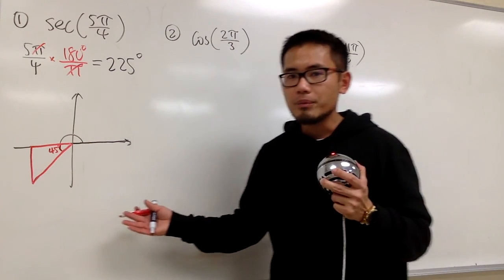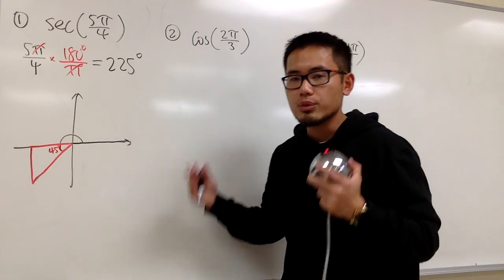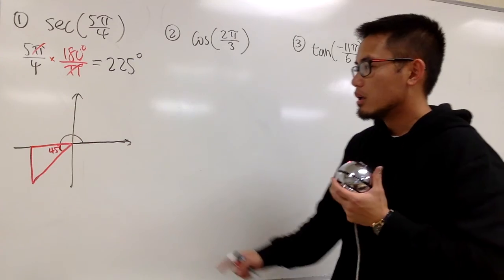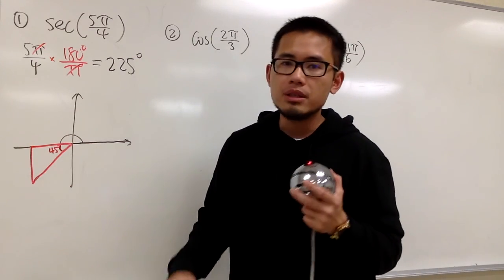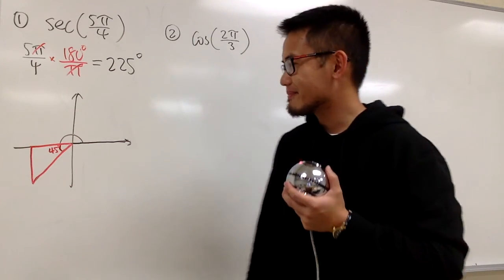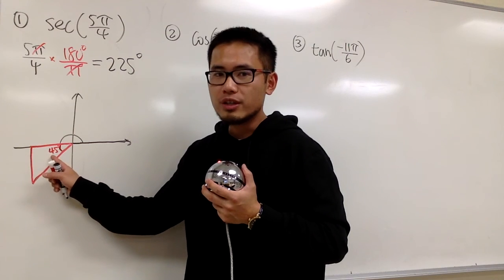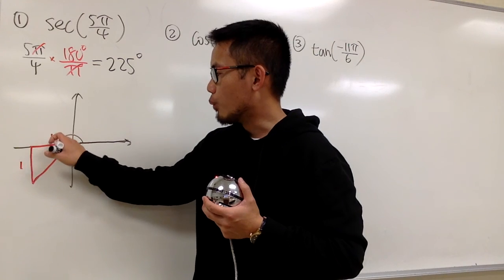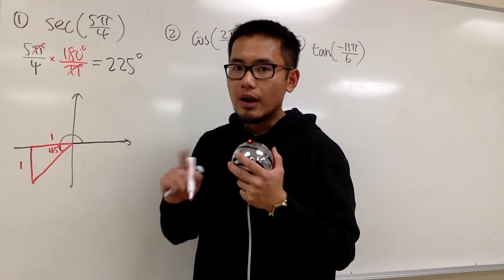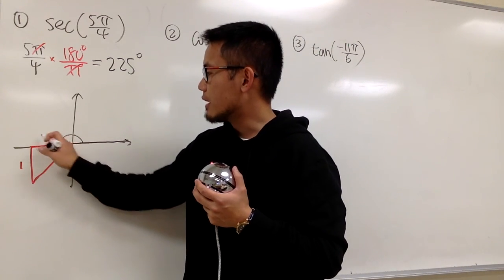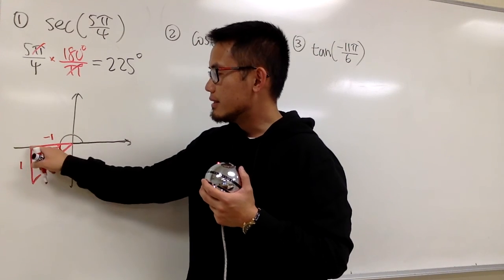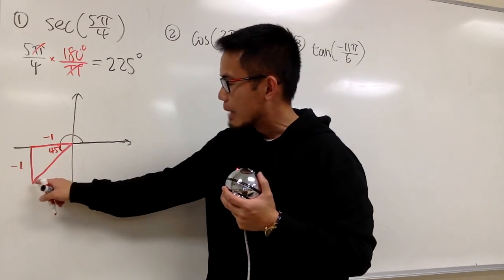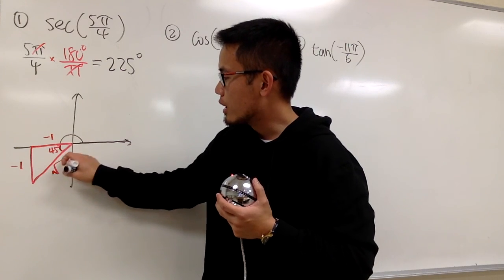For the reference triangle, if these questions are asking you to find values without a calculator, the reference triangle will always be one of the special right triangles. This is 45 degrees, so this is also going to be 45 degrees. That means the legs will be 1 and 1. However, because this side is to the left, it's negative 1. This side is down below, so it's also negative 1. For the hypotenuse, it's square root of 2.